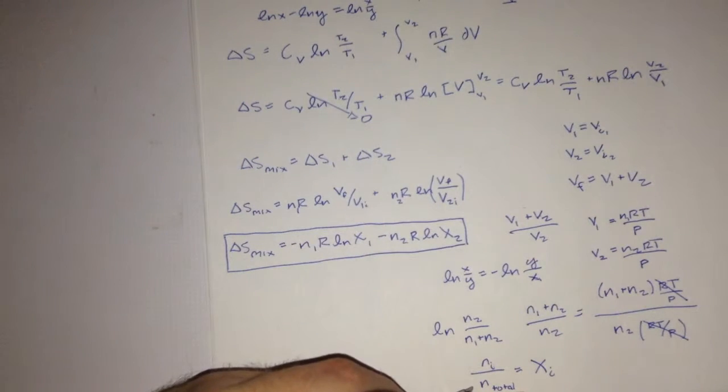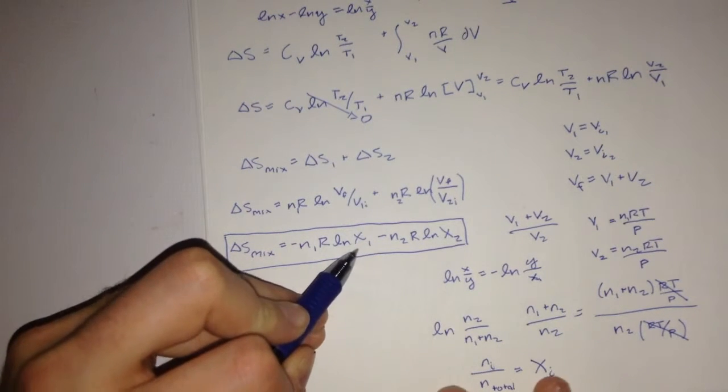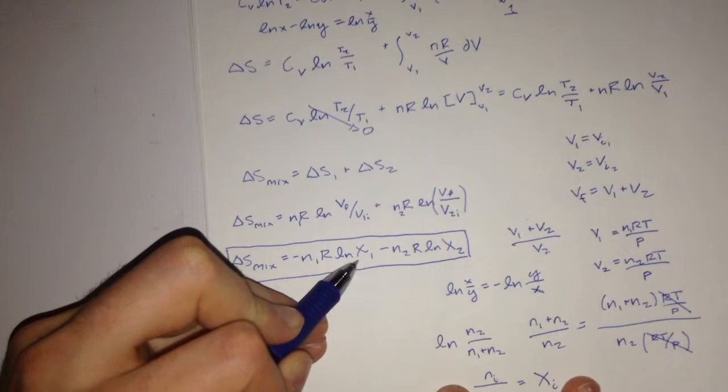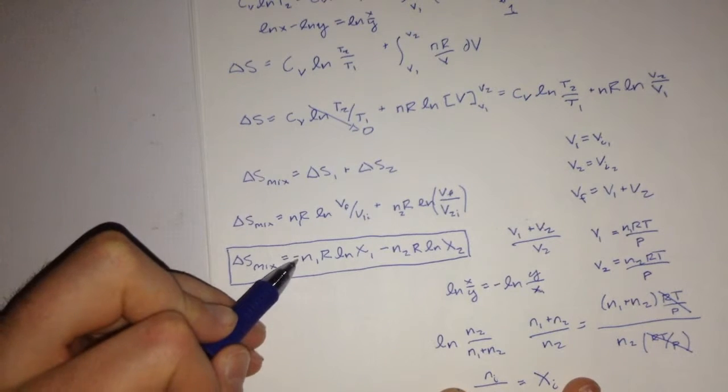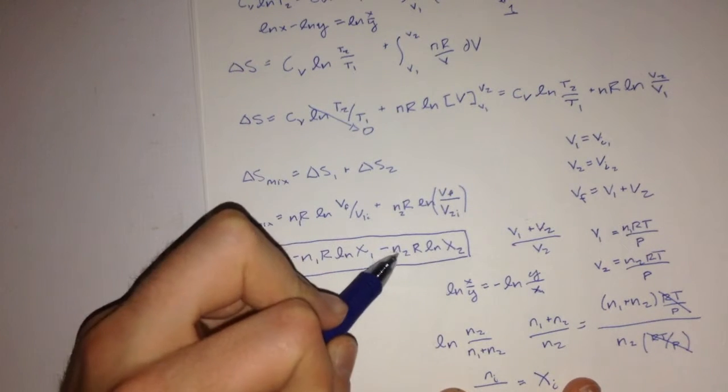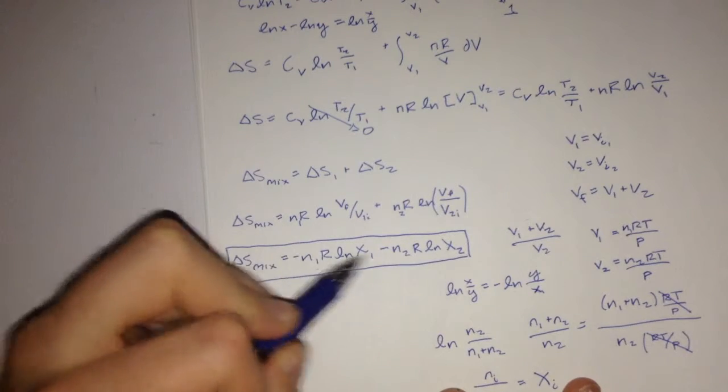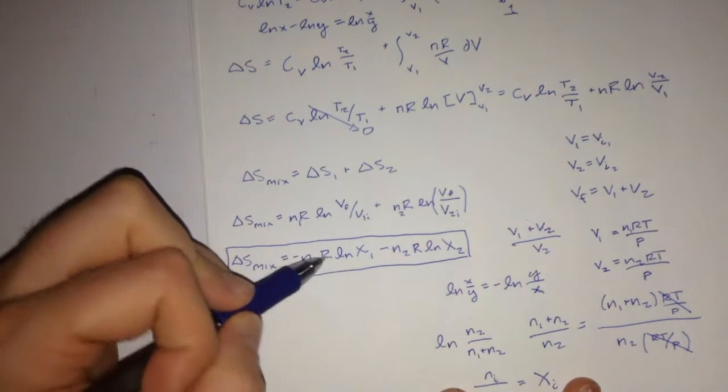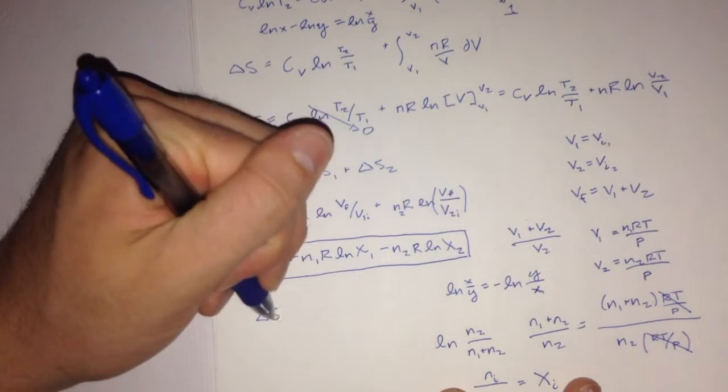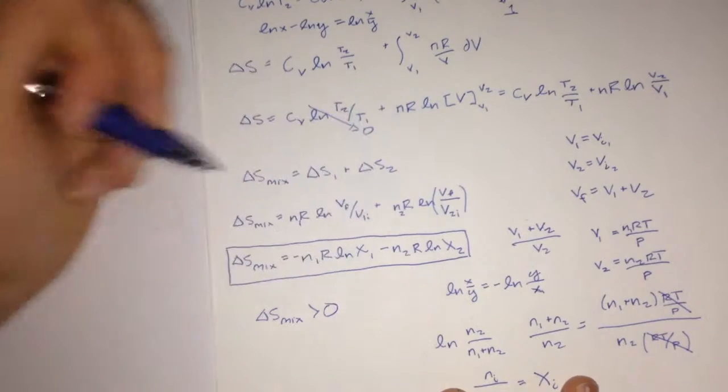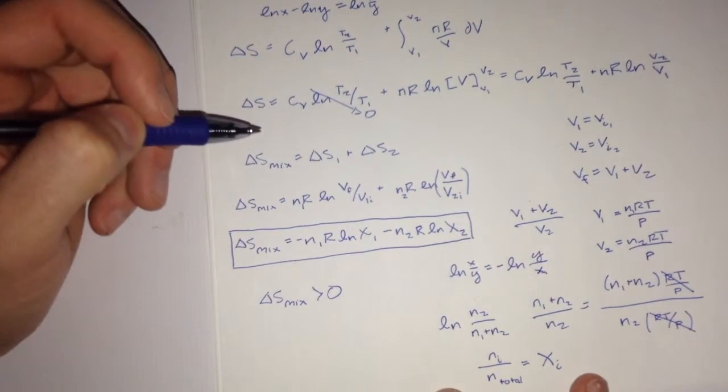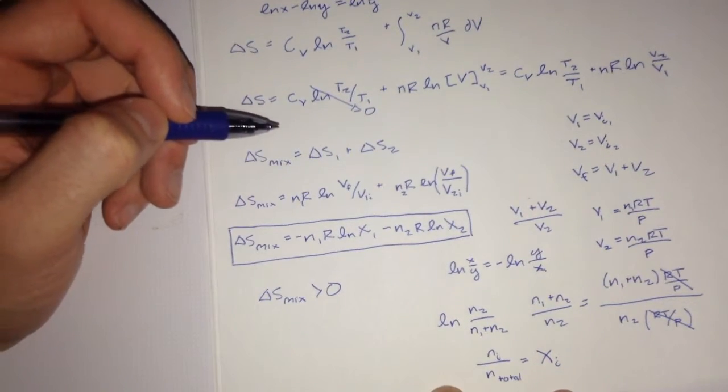That'll also mean that we're taking the ln with respect to something less than 1, which we know always to be negative. Therefore, a negative times a negative and a negative times a negative will always give these two values a positive answer. Therefore, delta S of mixing will always have to be greater than 0. And that also follows in line with the second law of thermodynamics.